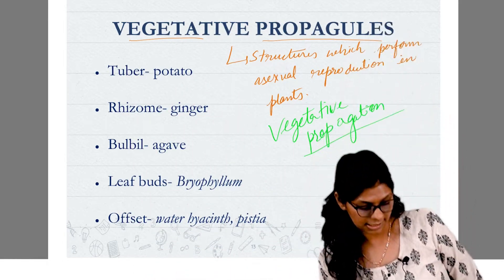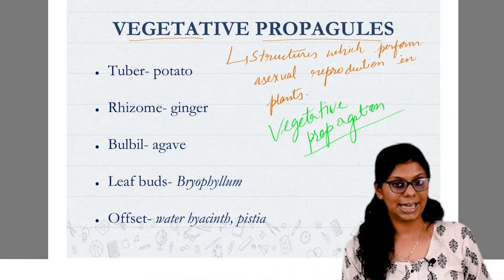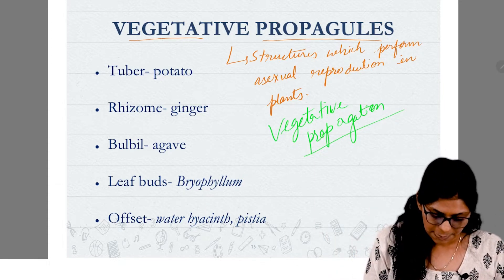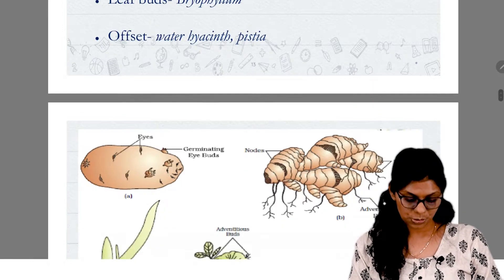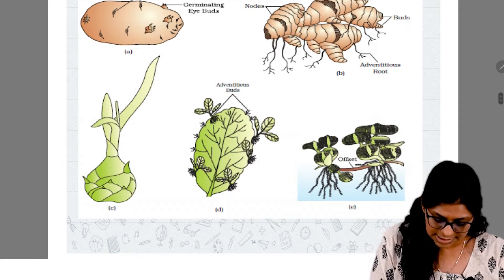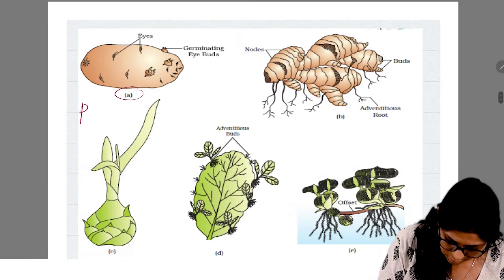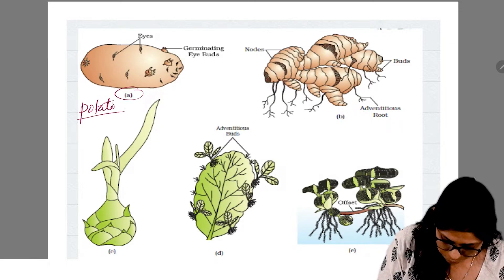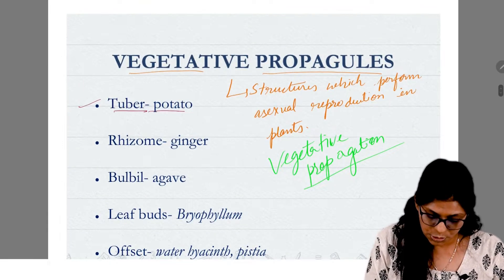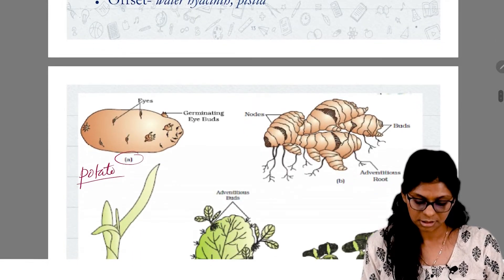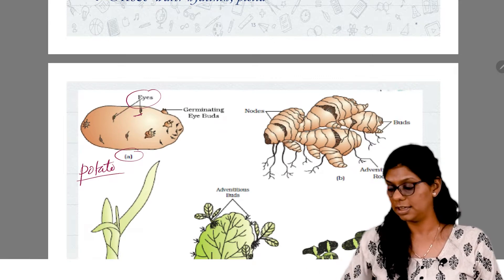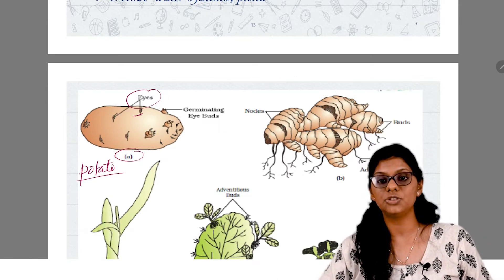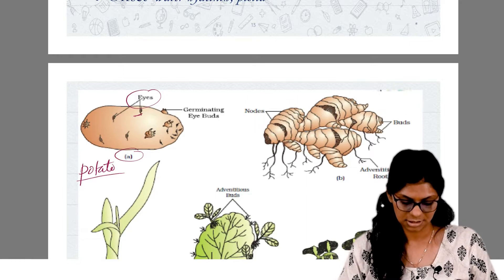There are some examples here, and if we understand them with diagrams, we will better understand. The first example is tuber in potato. In potato, the tuber — basically the eyes — this is the tuber. Now it will fall in the soil, germinate, and the new plant will come.